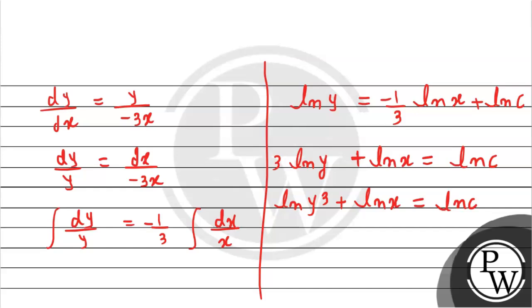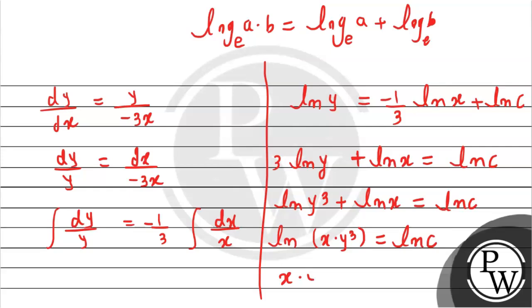Bringing the negative to the other side: 3ln(y) plus ln(x) equals ln(c). According to log properties, 3 goes in the power of y, so ln(y³) plus ln(x) equals ln(c). Using log property ln(a) plus ln(b) equals ln(ab), we get ln(xy³) equals ln(c).